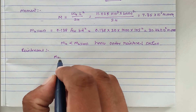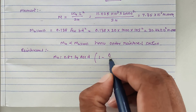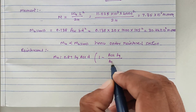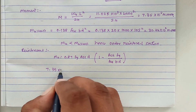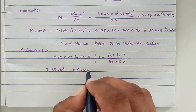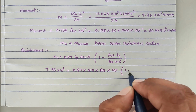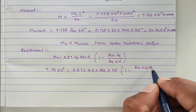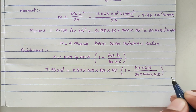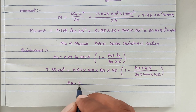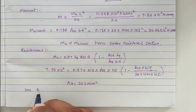Now we find the reinforcement using the formula: Mu = 0.87 × fy × Ast × d × (1 − Ast × fy / (fck × b × d)). Substituting 7.35 × 10⁶ = 0.87 × 415 × Ast × 105 × (1 − Ast × 415 / (20 × 1000 × 105)), we solve to get Ast = 202 mm². We use 8 mm diameter bars at 240 mm center-to-center spacing.